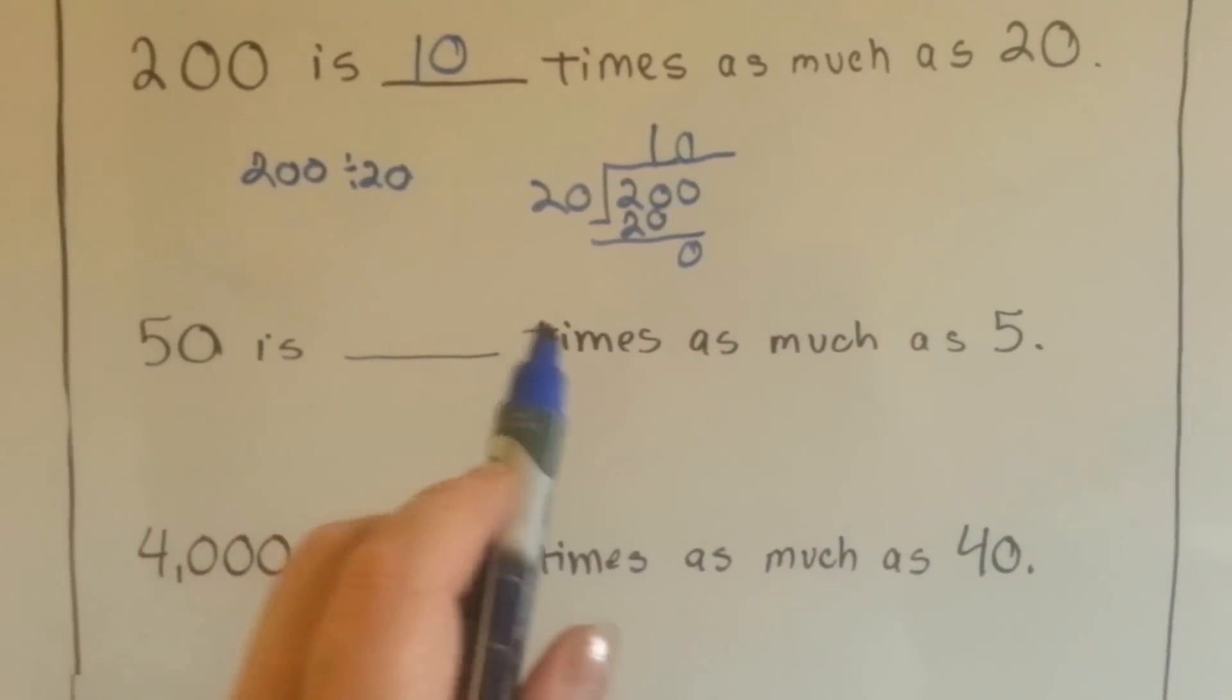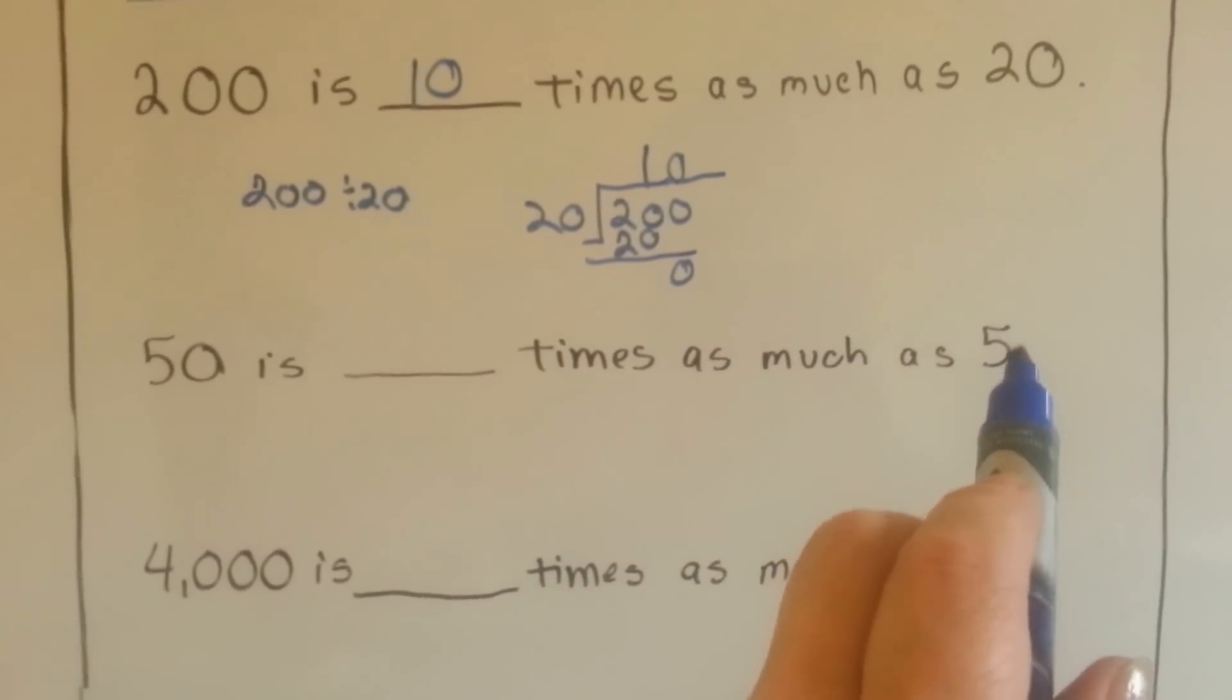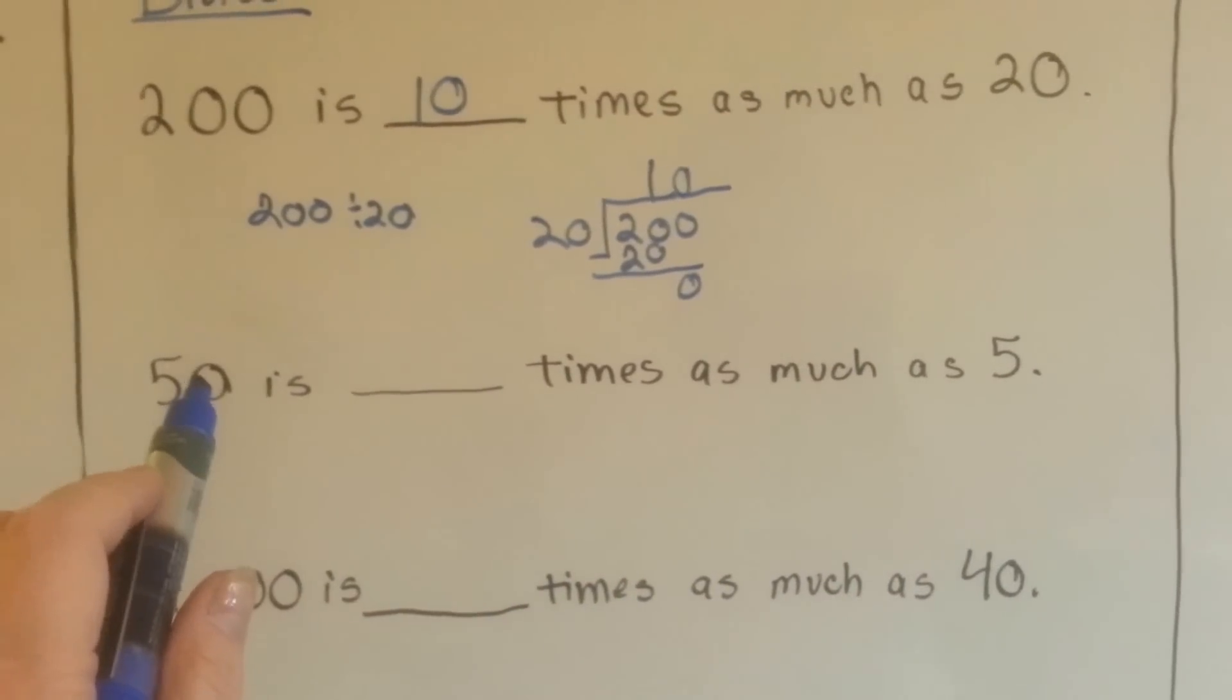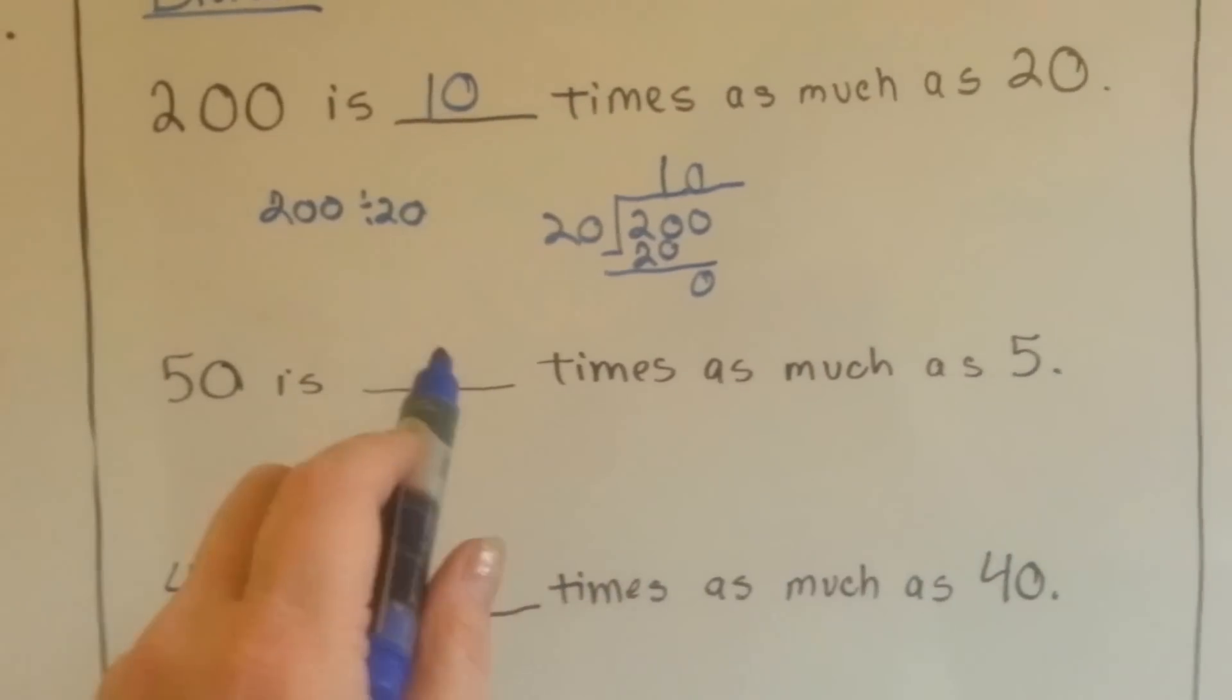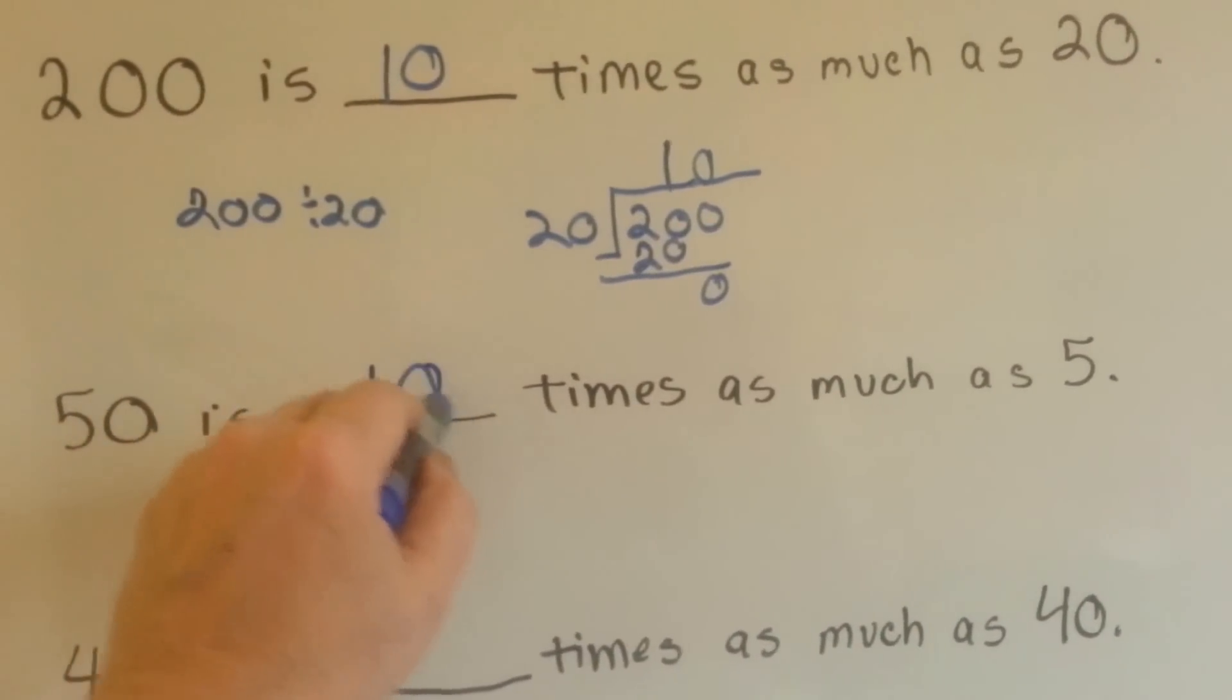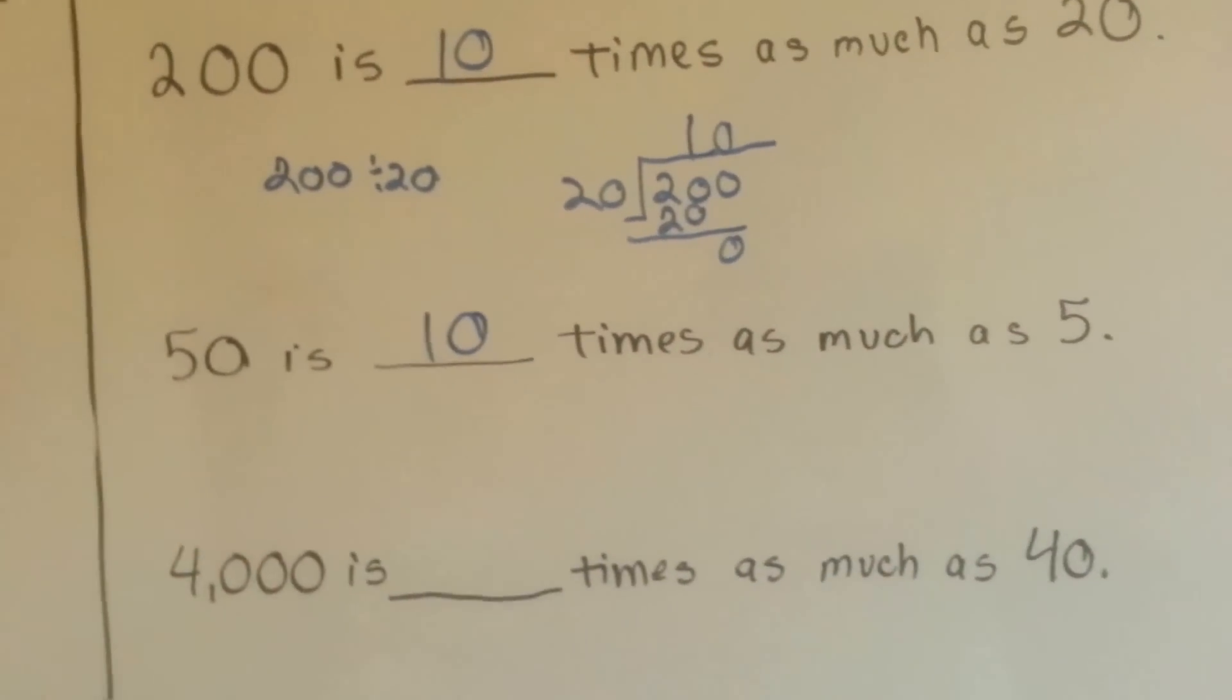How about this? 50 is blank times as much as 5. 5 times what is 50? Well, if we did it the opposite way by multiplying instead of dividing, 5 times 10 is 50, right?